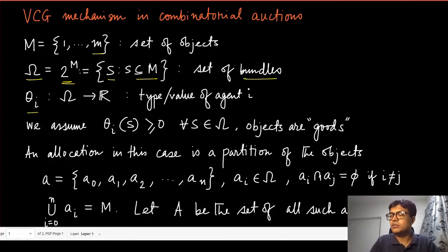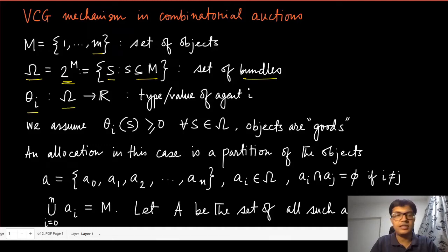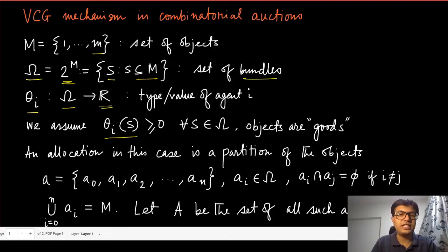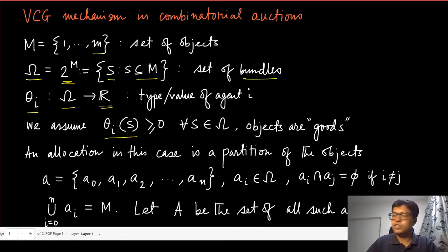The type theta_i in this context is defined as follows: you take any subset from the set omega, and theta_i maps that subset into the set of real numbers. So if you have a specific subset s of these objects, theta_i of s tells you how much agent i values that particular subset of objects.